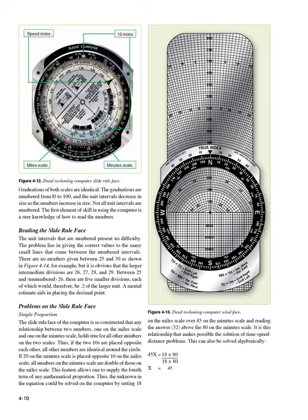The first element of skill in using the computer is a sure knowledge of how to read the numbers. The problem lies in giving the correct values to the many small lines that come between the numbered intervals. There are no numbers given between 25 and 30 (Figure 4-14), for example, but the larger intermediate divisions are 26, 27, 28, and 29. Between 25 and 26, there are five smaller divisions, each of which would therefore be 0.2 of the larger unit. A mental estimate aids in placing the decimal point.